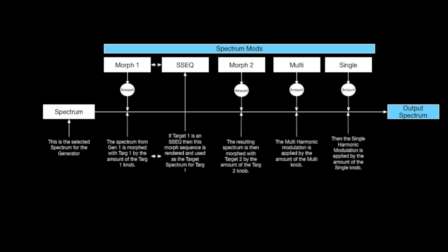One important thing to remember is the spectrum modulators are applied to the generator's waveform spectrum in series. This means that if Morph Target 1's amount is at 100%, you will not hear the generator's waveform spectrum. If Morph Target 2's amount is 100%, then you will not hear Morph Target 1 or the generator's waveform spectrum.